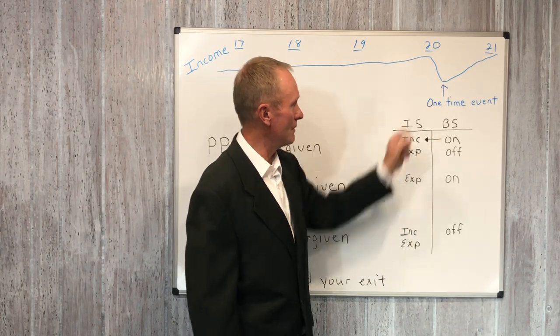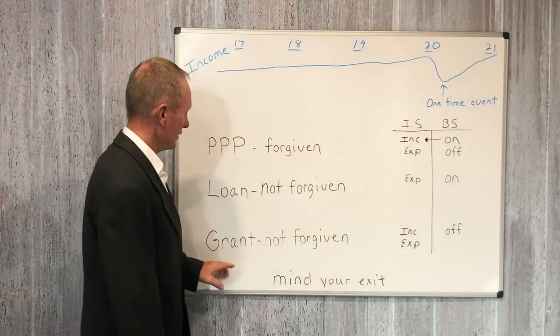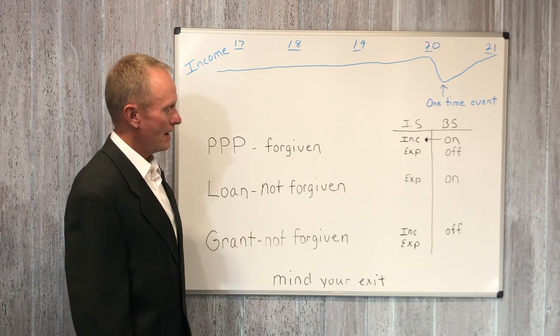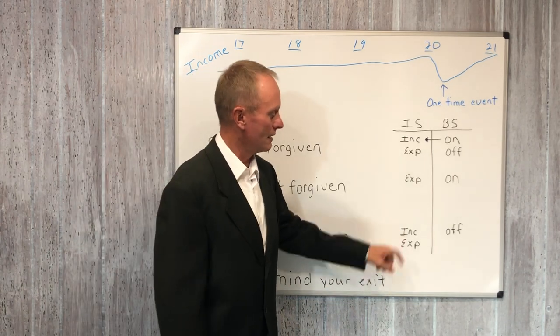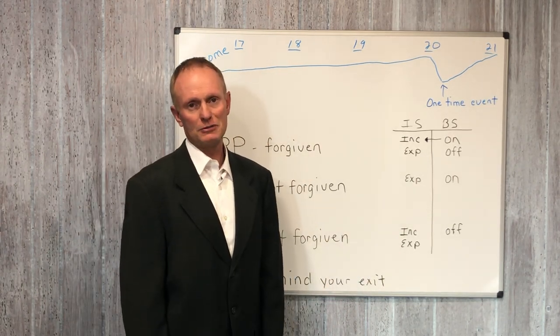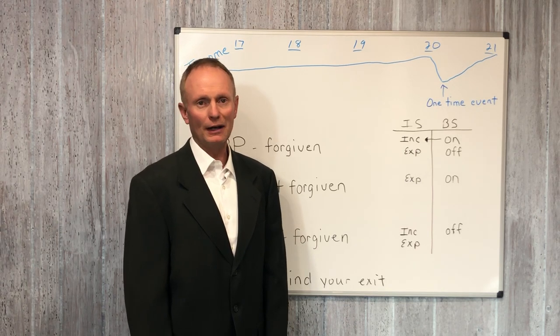If that's the case, treat it as a one-time event. It can be excluded, and you'll be okay. The last one, the grant, that money comes in and is treated as income and expense. That's income when it comes into your company and expense as you spend the money.